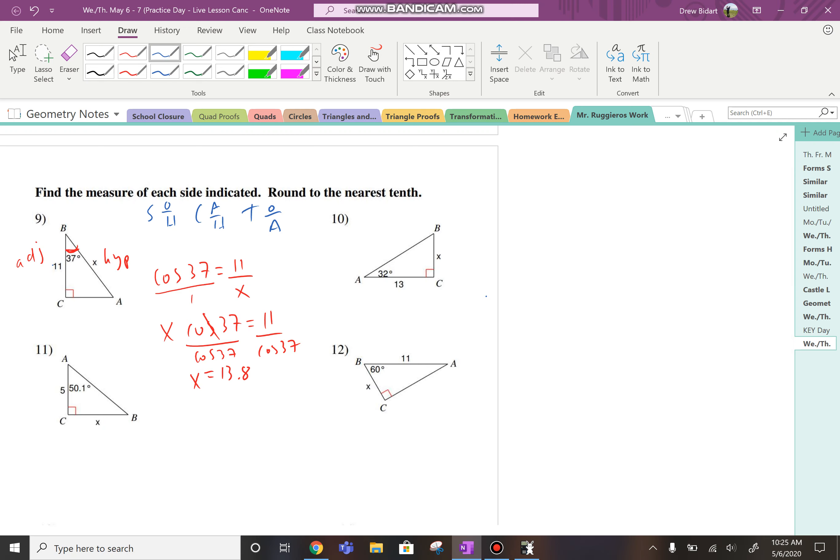Whereas in number 10, from the perspective of the angle 32, X should be opposite and 13 should be adjacent. So that should be the tangent. The tangent of the angle equals the opposite over the adjacent.